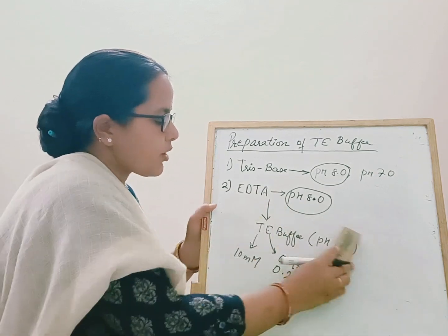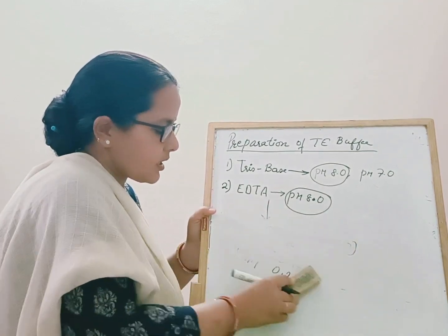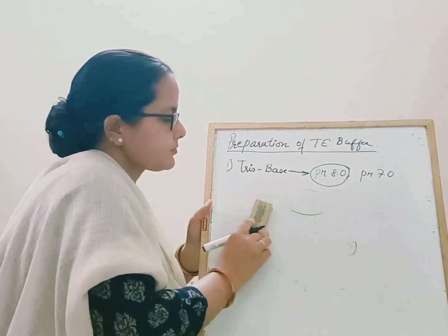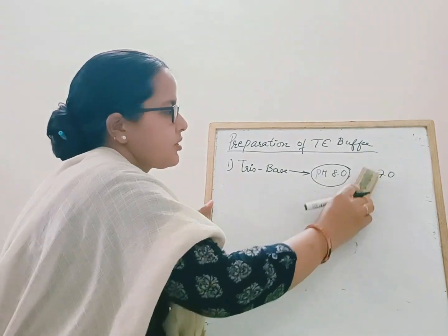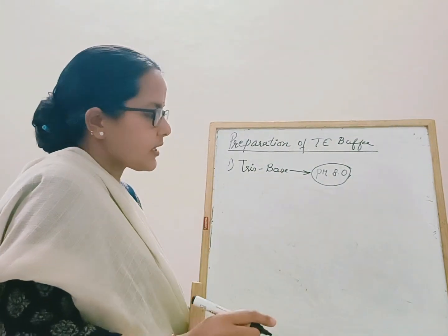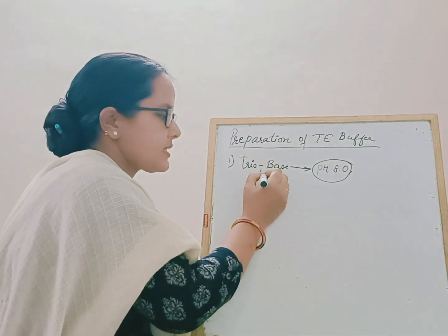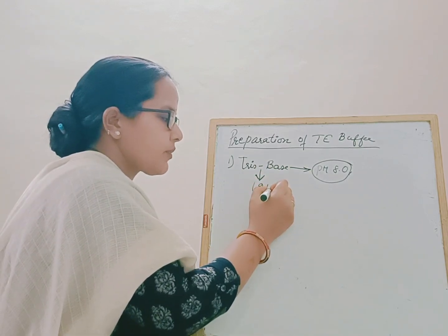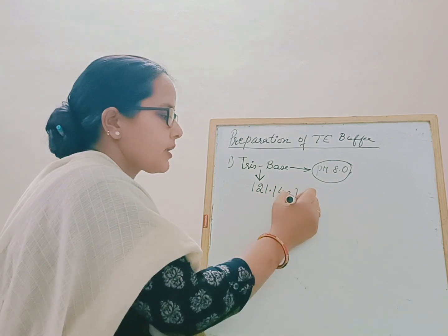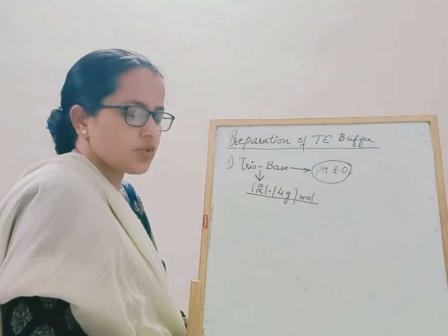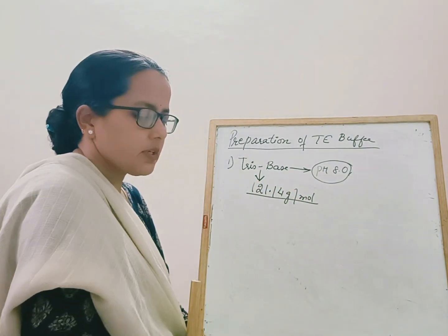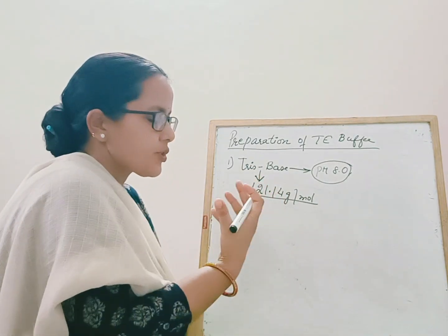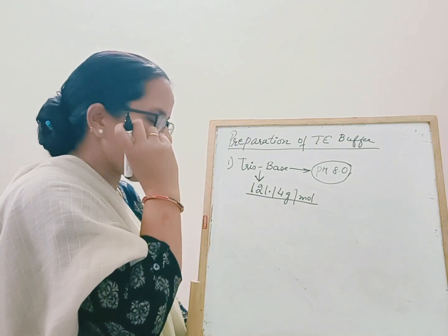We will first see how to prepare Tris buffer at pH 8. Tris base is available in the market in powder form, with a molecular weight of 121.14 grams per mole. You purchase this Tris base powder from the company and use it for your preparation.